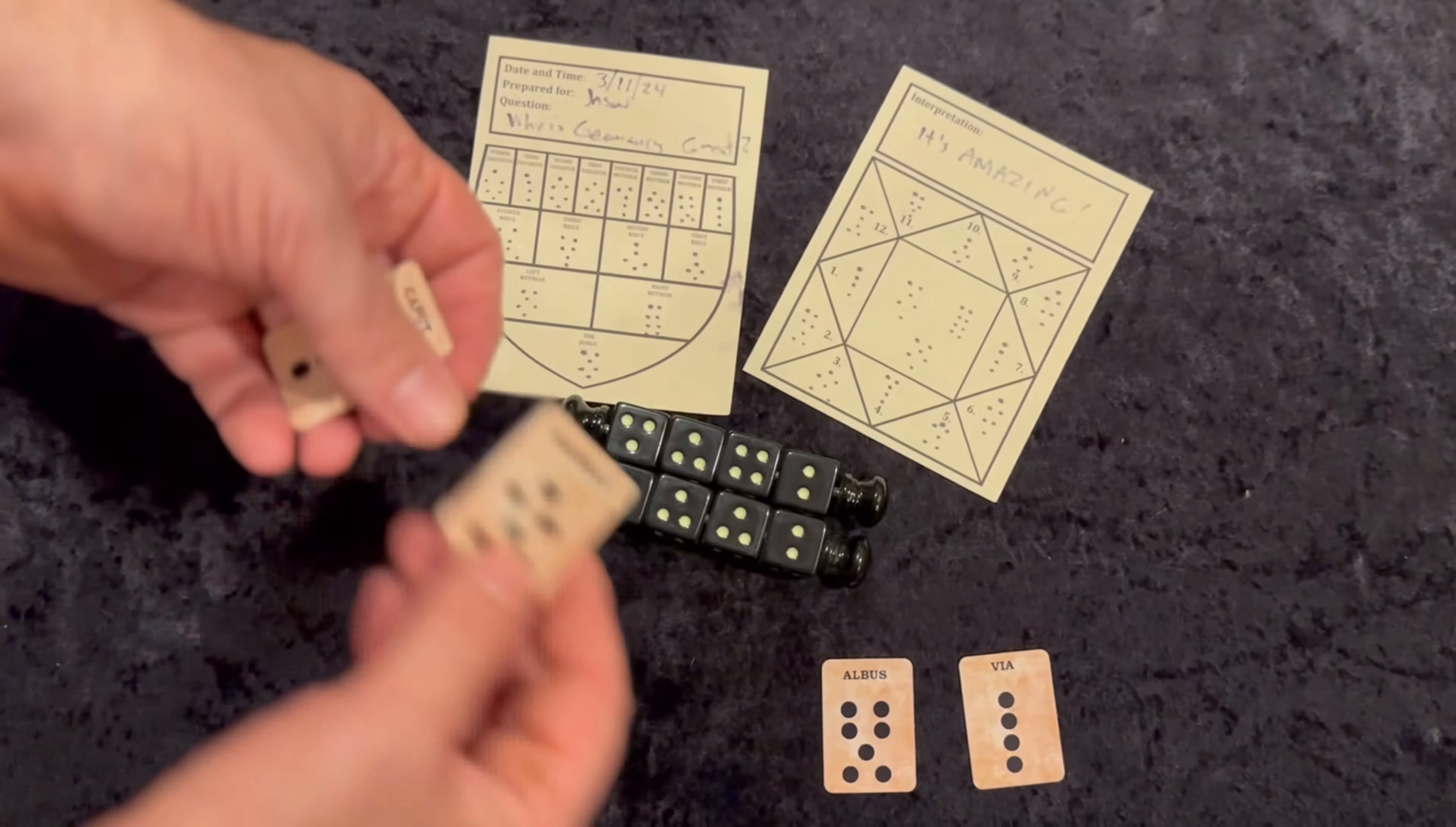For just a little more, a limited number of deluxe sets are also available with two luxurious casting cloths, as well as a set of cards with key words that make reading Geomancy incredibly simple right away.